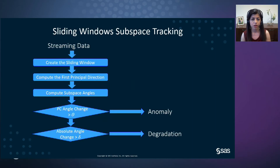Here is the process flow for subspace tracking using sliding windows. With each streaming data point, we create the associated window and compute the first principal direction and the associated subspace angles. Next, we measure the change in the angles, and if it is more than some pre-specified threshold, we might detect anomalies or degradation in the system.